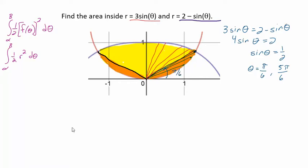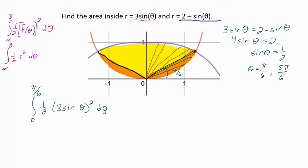So our first integral is going to be the integral from 0 to pi over 6, finding the area bounded by the red curve which is 3 sine theta. So we do one half times (3 sine theta) squared d theta. That's going to give us the orange area.